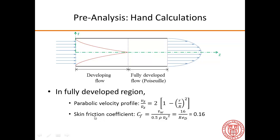The third aspect of pre-analysis is our hand calculations. We have uniform flow coming in, we're going to get a developing boundary layer, they're going to merge, and we're going to get fully developed flow. In the fully developed region, we can perform hand calculations.